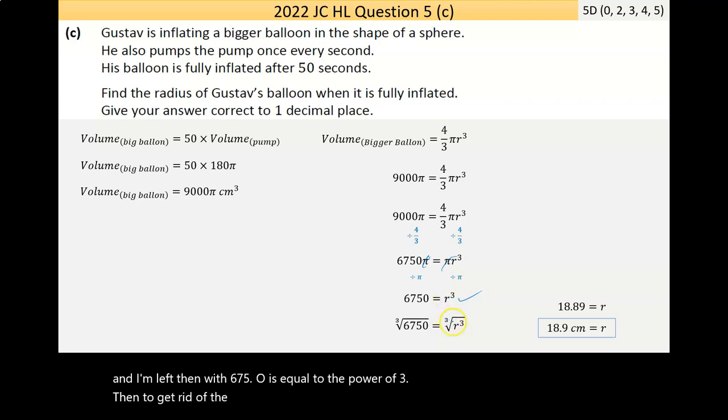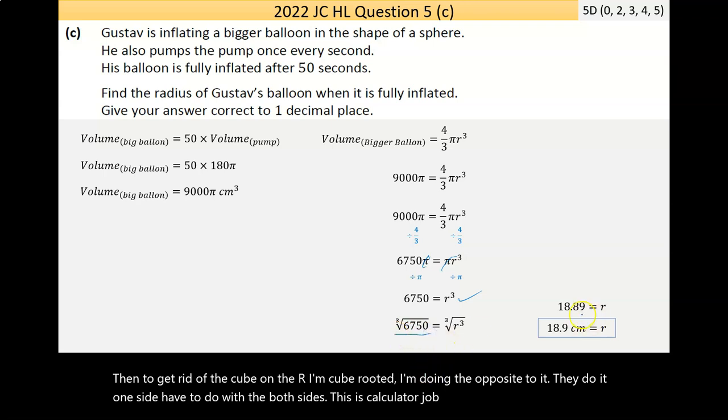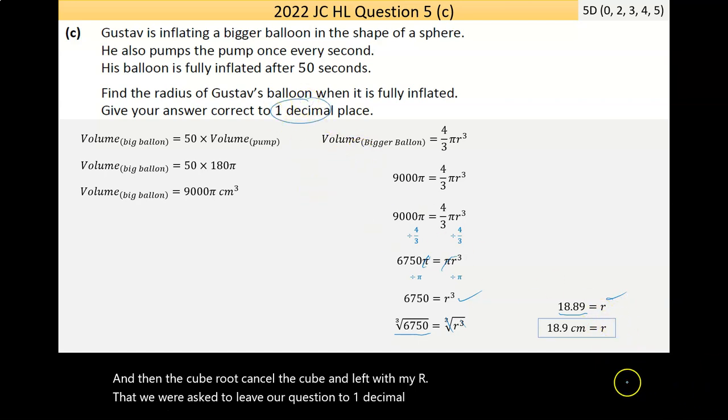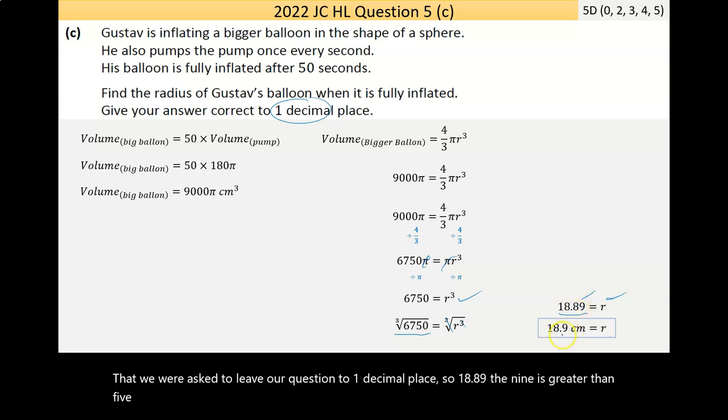To get rid of the cube on the r, I'm cube rooting it. I'm doing the opposite to it. If I do it to one side, I have to do it to both sides. This is a calculator job. I put it through, I got 18.89. The cube root cancels the cube, I'm left with my r. We were asked to leave our question to one decimal place. 18.89, the 9 is greater than 5, so the next number goes up by 1. I get my answer of 18.9. And that's it.